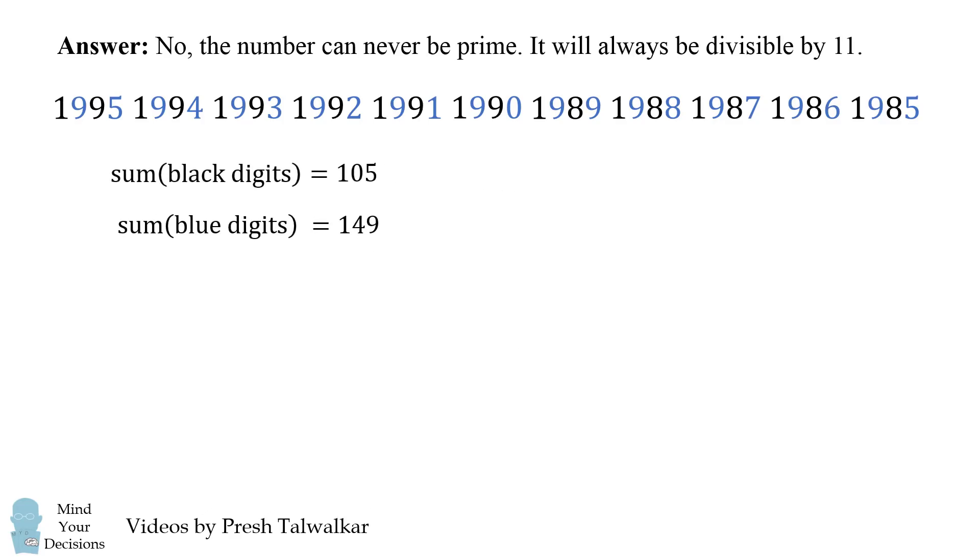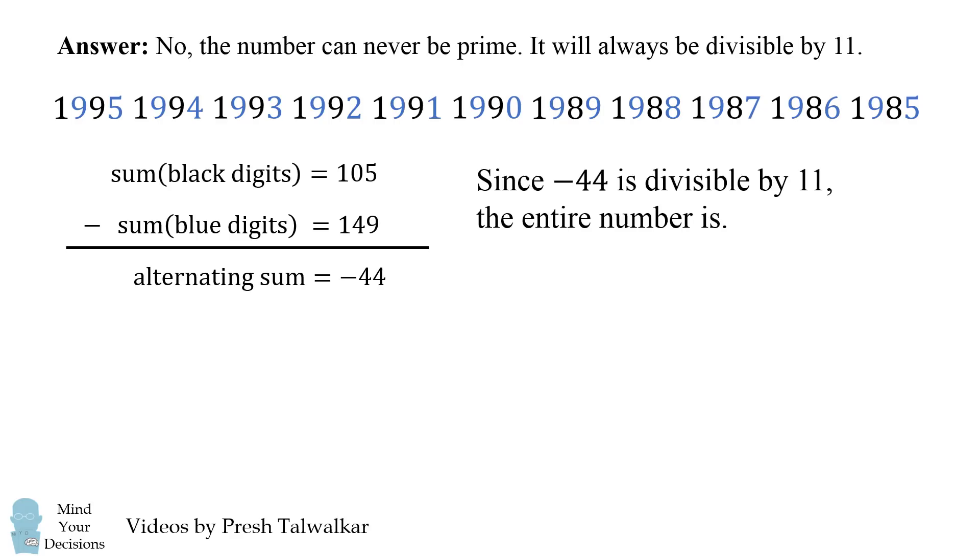So the alternating sum will be the sum of the black digits minus the sum of the blue digits, and this will be equal to negative 44. Since negative 44 is divisible by 11, the entire number is.